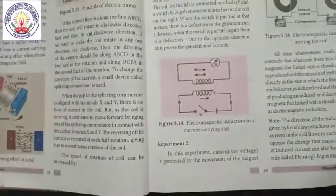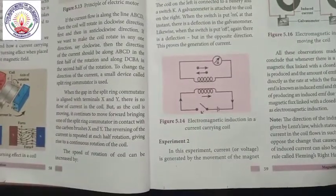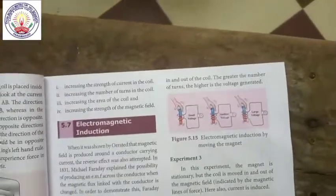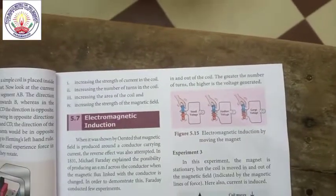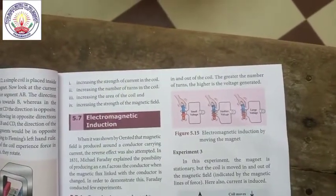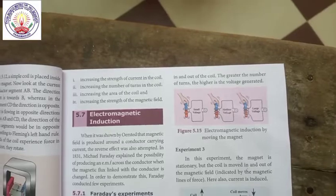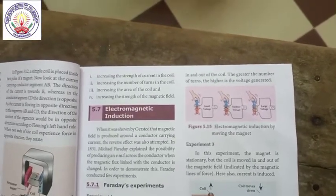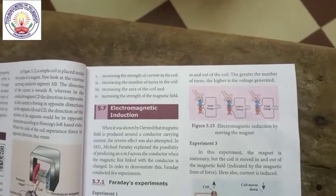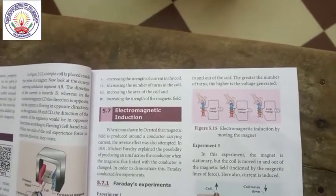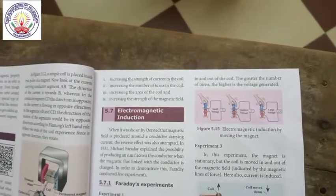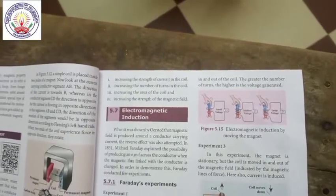Experiment two: In this experiment, the current is generated by the movement of a magnet in and out of a coil. The greater the number of turns, the higher is the voltage generated. This is how the magnetic force produces the electric force — electromagnetic induction.